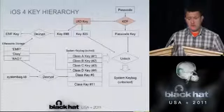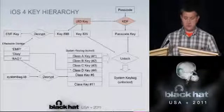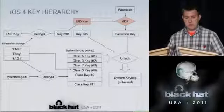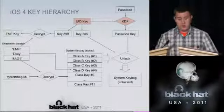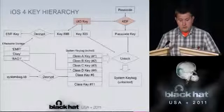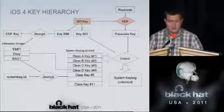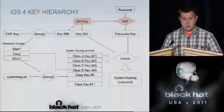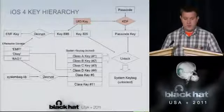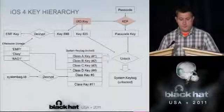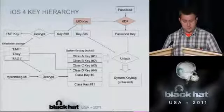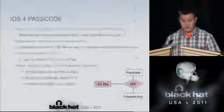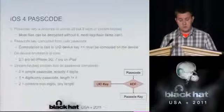The ultimate secrets required to decrypt all data on the device — data belonging to all content protection classes — are the complete set of unlocked content protection keys. There are two ways to obtain them. Unlocking requires two keys: the device key and the passcode key. Obtaining the device key is relatively easy, and obtaining the system key bag in its locked state is also relatively easy, but obtaining the passcode key might be difficult and may require passcode brute force.